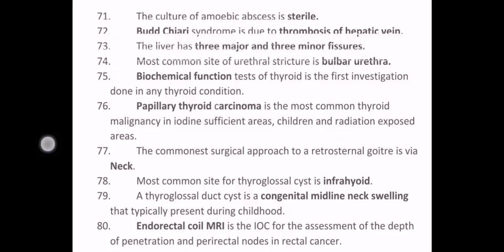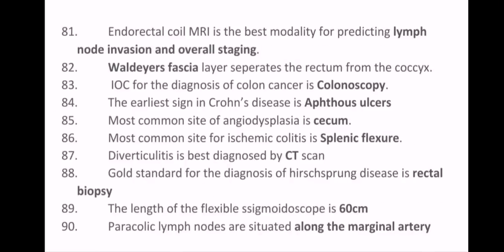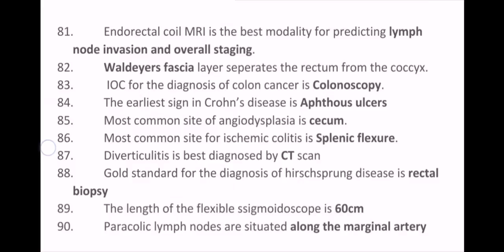Endorectal coil MRI is the investigation of choice for assessing depth of penetration and perirectal nodes in rectal cancer, and is the best modality for predicting lymph node invasion and overall staging. Waldeyer's fascia separates the rectum from the coccyx. The investigation of choice for the diagnosis of colon cancer is colonoscopy. The earliest sign in Crohn's disease is aphthous ulcers. The most common site of angiodysplasia is the cecum. The most common site for ischemic colitis is the splenic flexure.